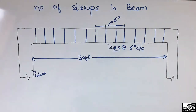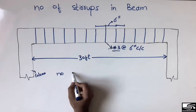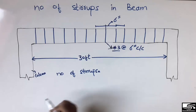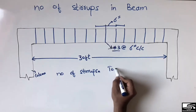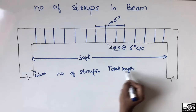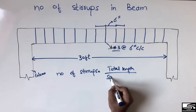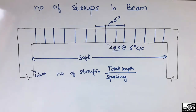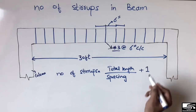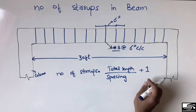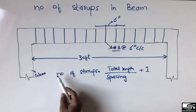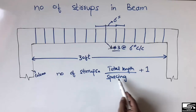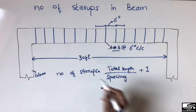There is a simple formula to find the number of stirrups in a beam. Number of stirrups equals the total length of the beam divided by the spacing of the stirrups, plus one. I will also show why we add one with this formula later.